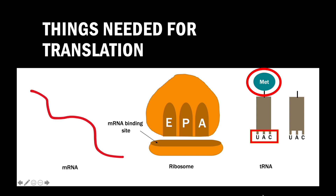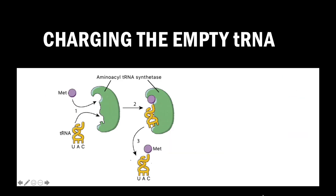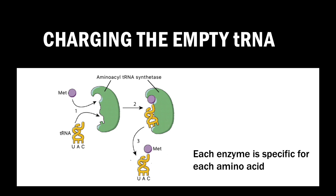How does the empty tRNA get charged again? The charging of empty tRNA is carried out by the enzyme called aminoacyl tRNA synthetase. Empty or uncharged tRNA will be charged by this enzyme, forming a charged tRNA. Each aminoacyl tRNA synthetase enzyme is specific for each amino acid.